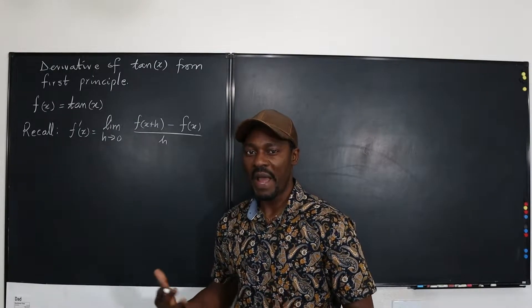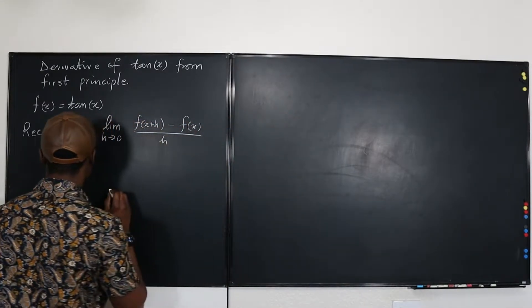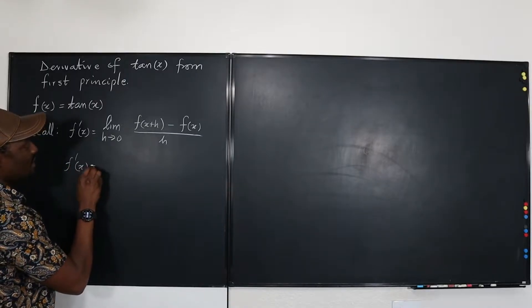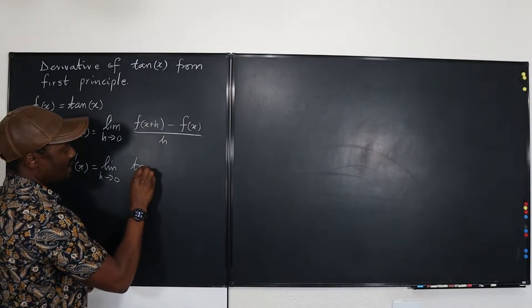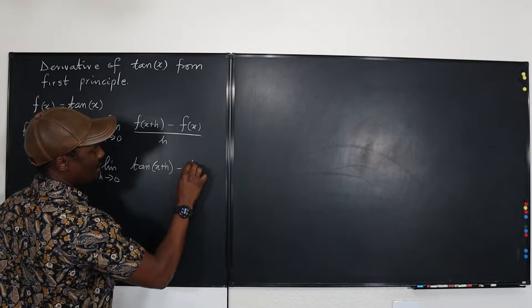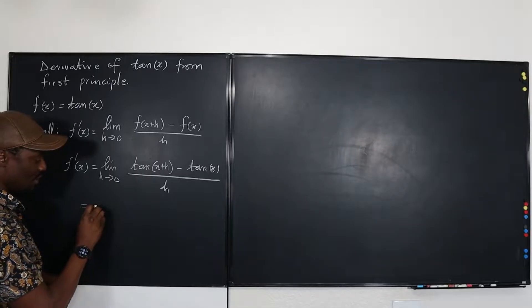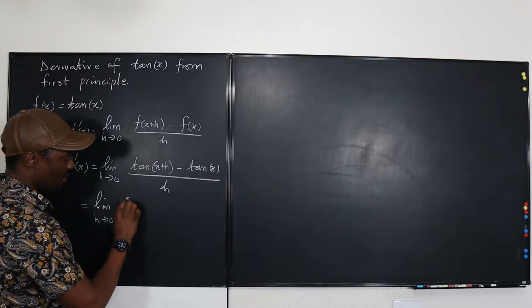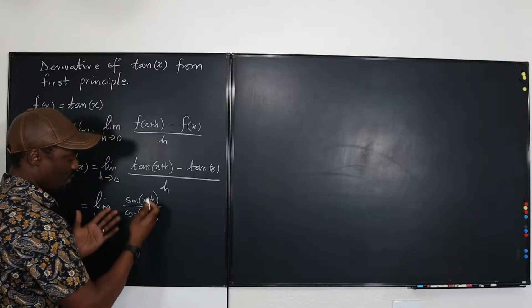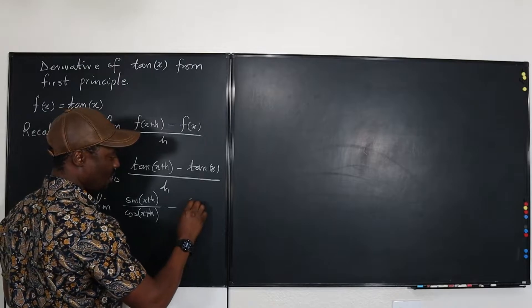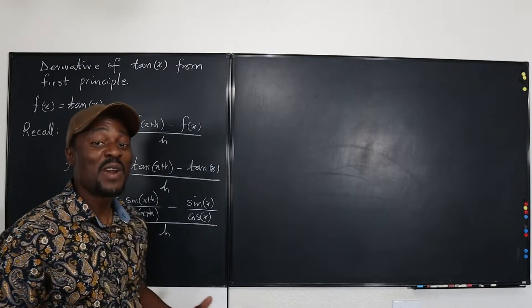The first thing is to go back to our understanding of trig. Remember that tangent is defined as the ratio of sine to cosine. So we rewrite: f′(x) is the limit as h goes to zero of tan(x+h) minus tan(x) divided by h. We can accurately rewrite this as the limit as h goes to zero of sin(x+h) over cos(x+h), minus sin(x) over cos(x), all divided by h.